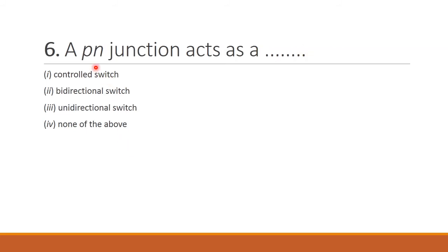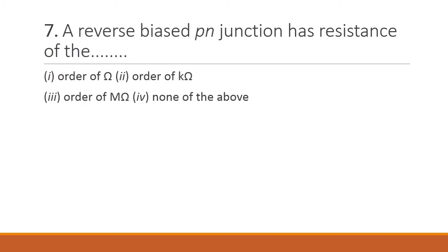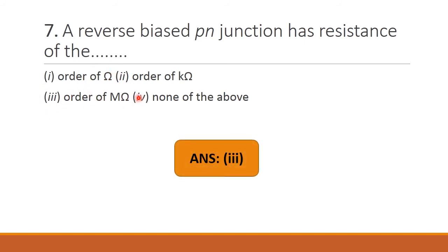Next question: A PN junction acts as — a controlled switch, bi-directional switch, uni-directional switch, none of the above. We know it can act as a switch, and it is used for rectification — rectifier means only one direction, there will be flow of current. Option 3 is the correct answer. Next question: A reverse-biased PN junction has resistance of the order of mega-ohm. Reverse biased means the resistance will be more — option 3 is the right answer.